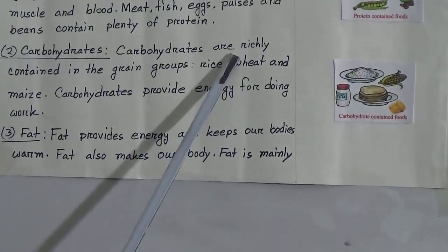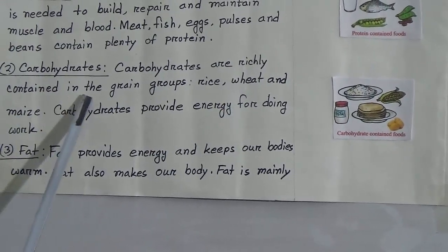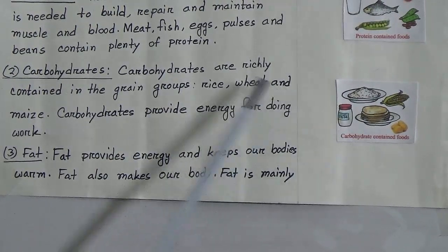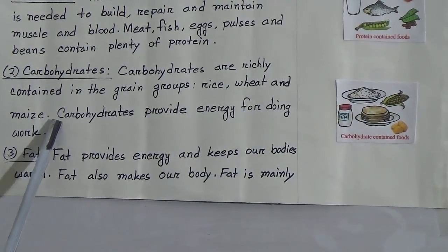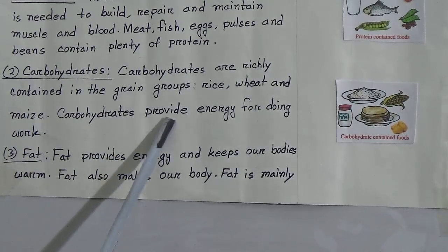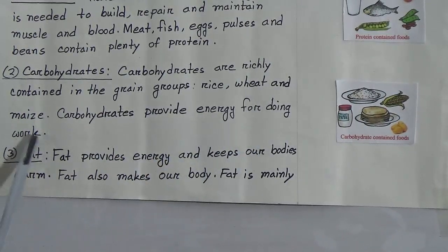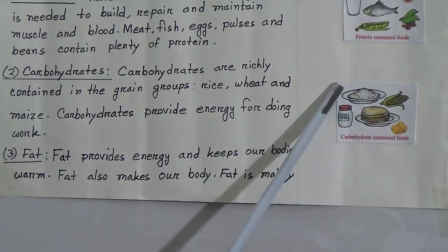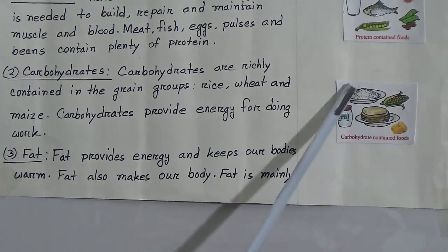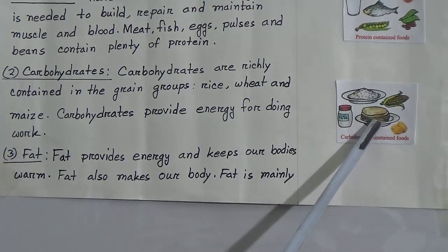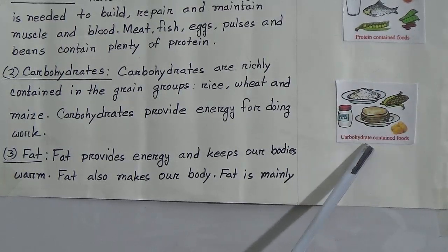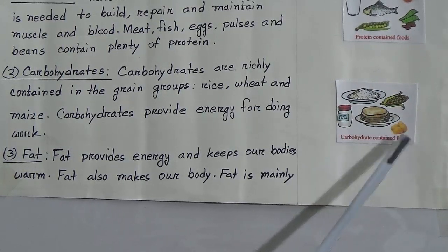Number two is carbohydrates. Carbohydrates are richly contained in the grain groups — rice, wheat, and beans. Carbohydrates provide energy for doing work. You can see in the picture here some foods — rice, bread, and potato — these are all carbohydrate-containing foods.